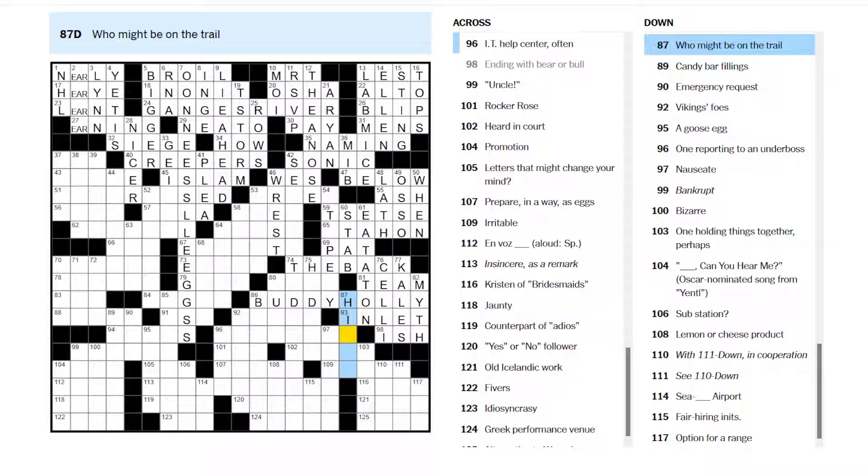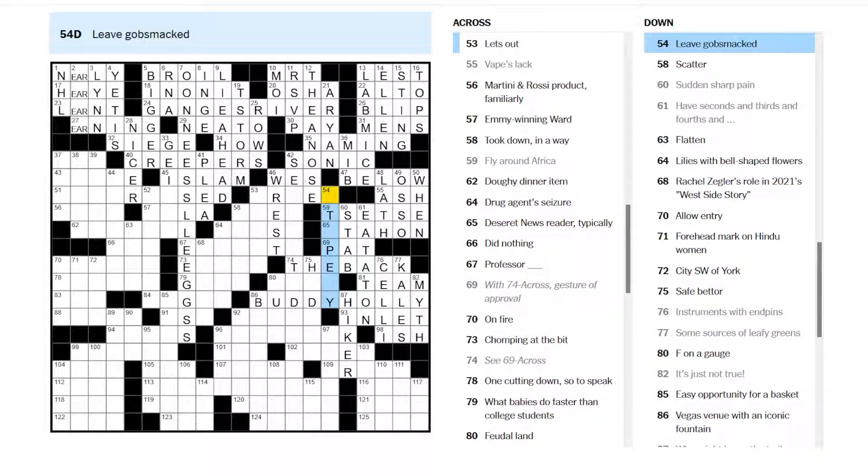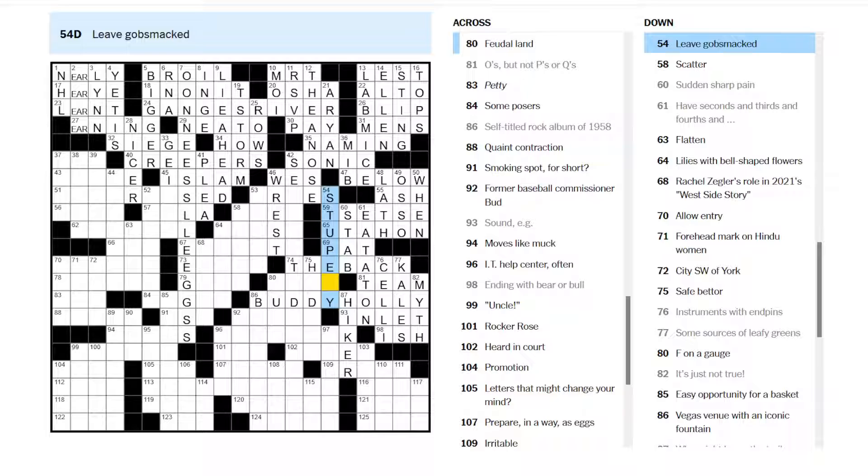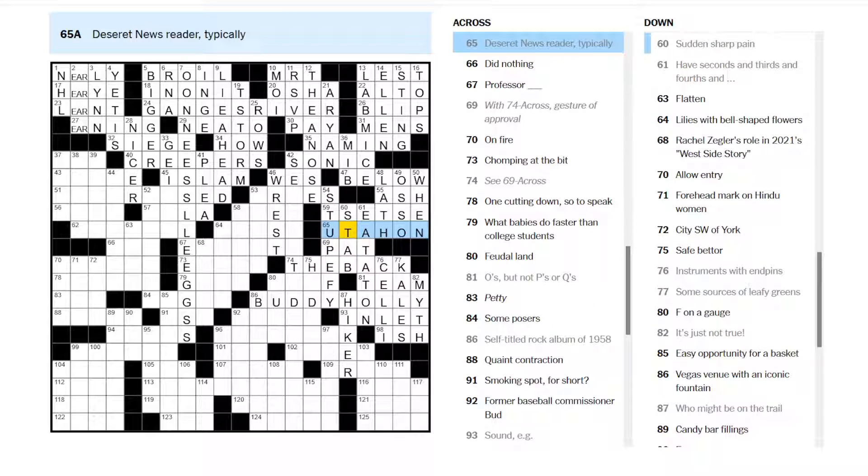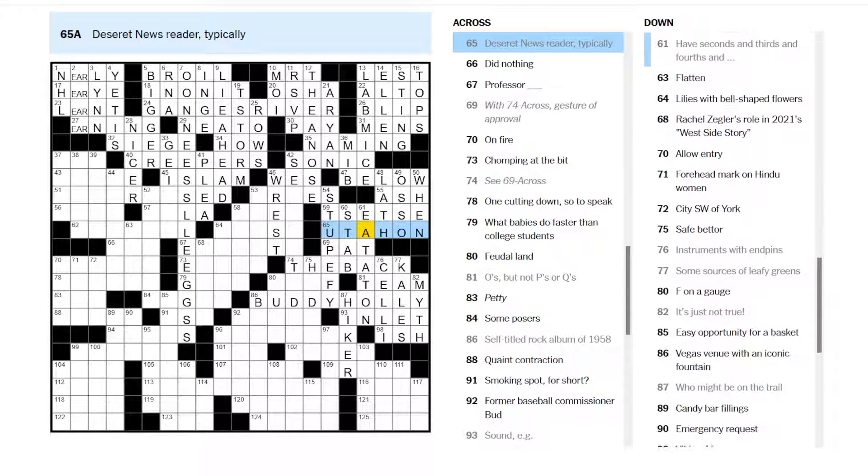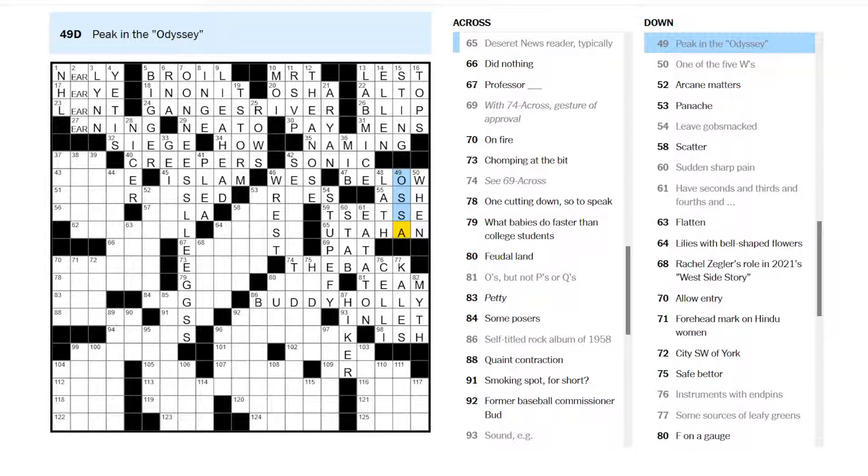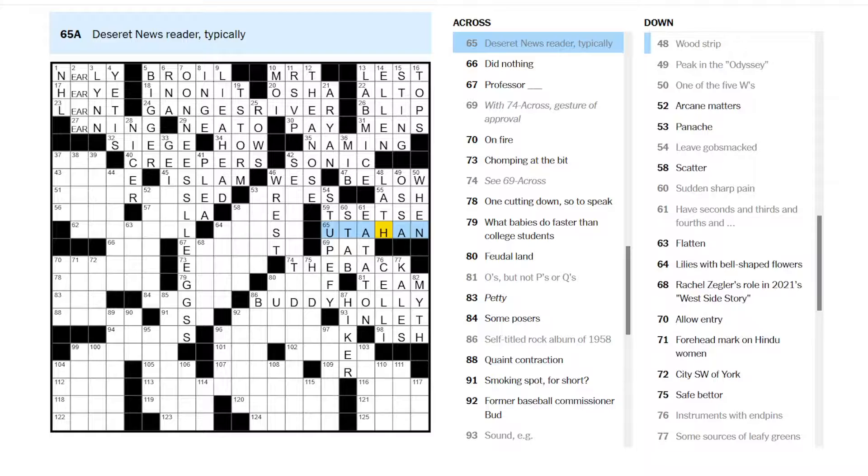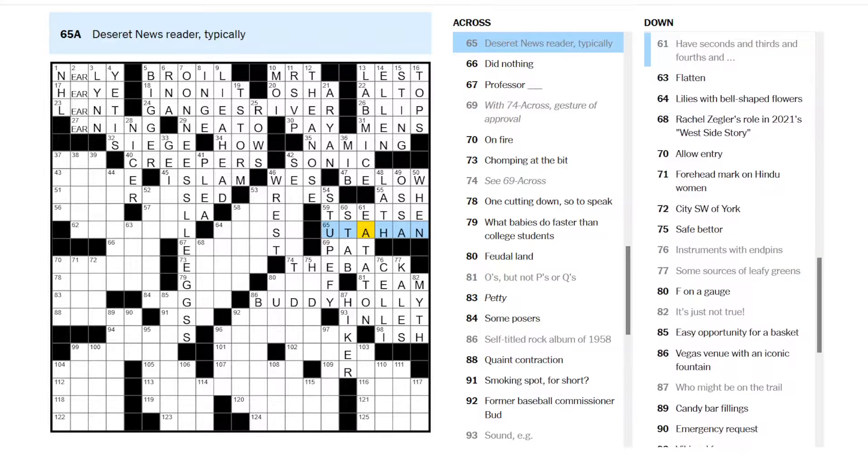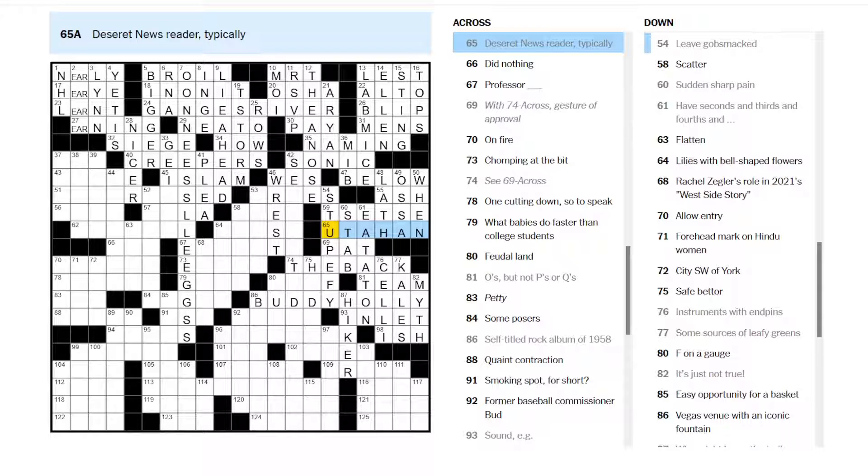Who might be on the trail? A hiker, maybe, could be on a trail. Let's try and fill in some of those back answers here. Leave is to stupefy. Uda? Uda Han? What? Osa, I think, maybe. Deseret News Raider. Are you, oh, a U-ton. Okay. Someone from Utah. A U-ton. Jeez.